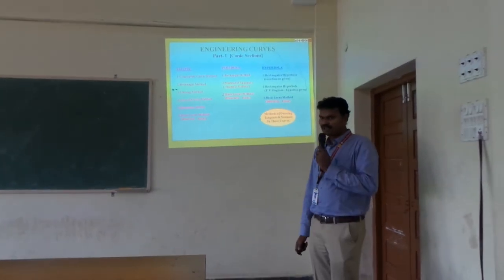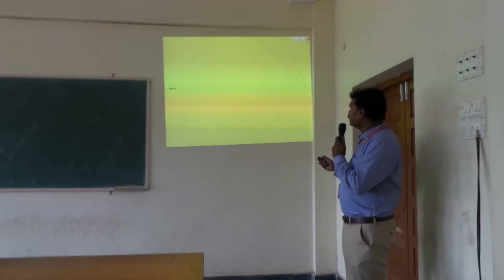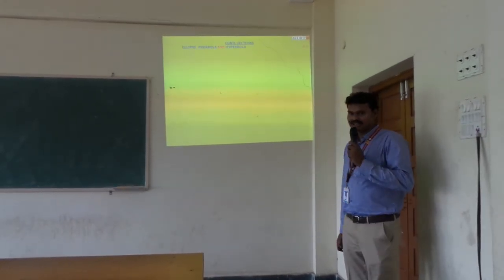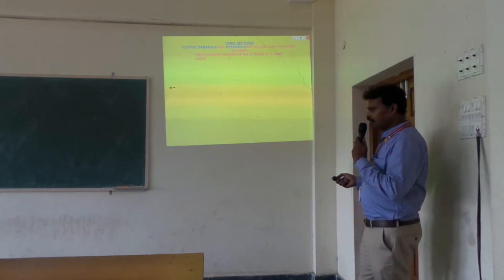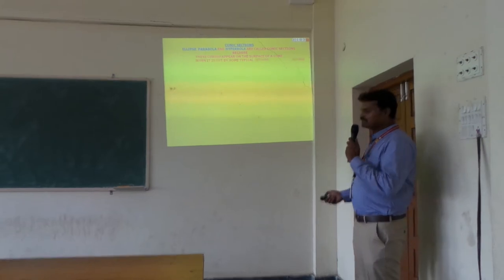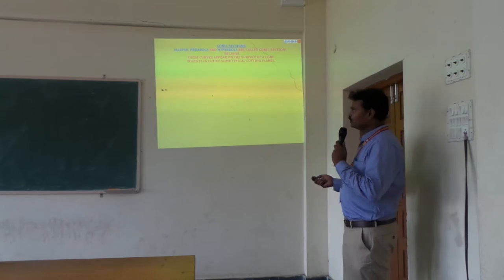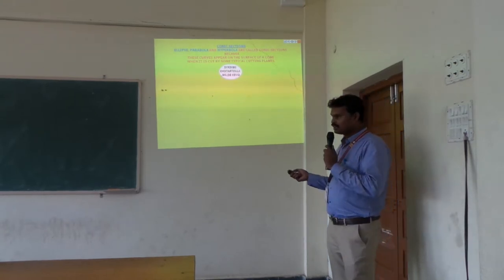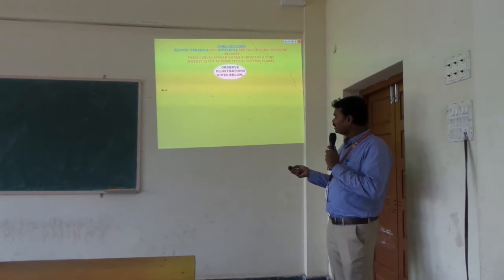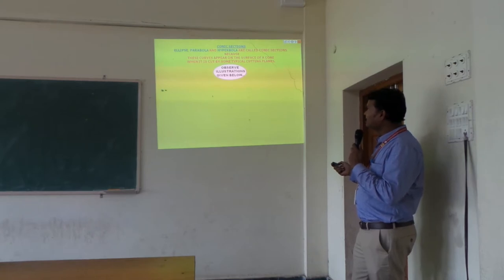Good morning. Today I am going to discuss about engineering curves, also coined as conic sections. Why do we call them conic sections? When you take a cone and cut it in different ways, different conic sections are formed. There are three different types: the first one is ellipse, the second is parabola, and the third one is hyperbola.